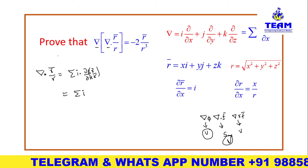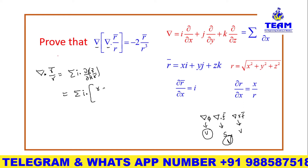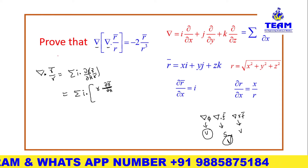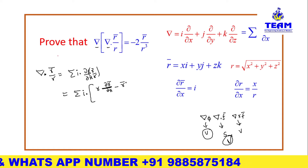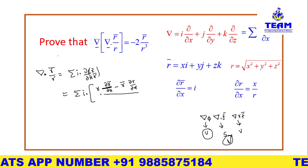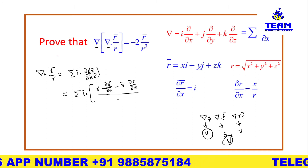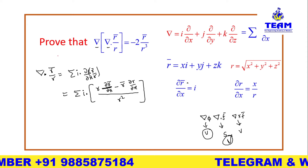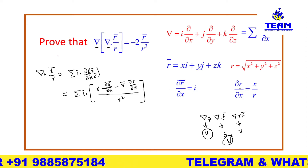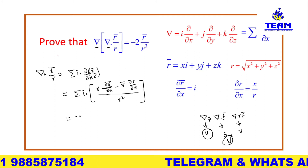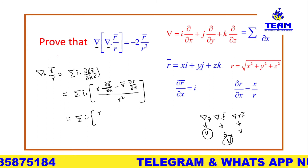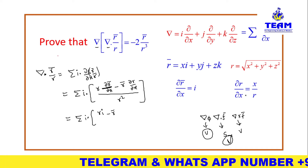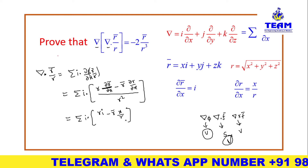So I am writing: summation i · [r·(∂r̄/∂x) − r̄·(∂r/∂x)] / r². Now substituting the known values: ∂r̄/∂x = i and ∂r/∂x = x/r. So this becomes: summation i · [r·i − r̄·(x/r)] / r².